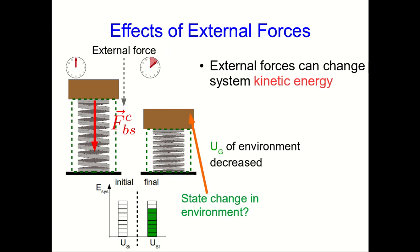I didn't include the gravitational potential energy in my energy bar chart because it's not in my system. So here we see that an external force, the force that the brick exerts on the spring, appears to have caused a change in the system's potential energy.